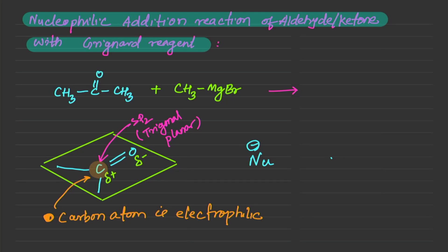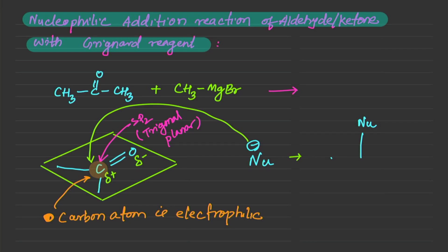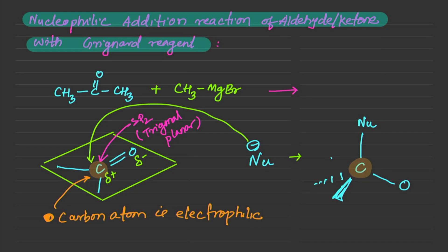For simplicity, let's say the nucleophile attacks from the top — though it could also go from the bottom. The nucleophile approaches from the top, so I'll draw the nucleophile here, the carbon atom with the stereocenter here, oxygen on this side, and the two R groups — R1 and R2 — pointing on either side.